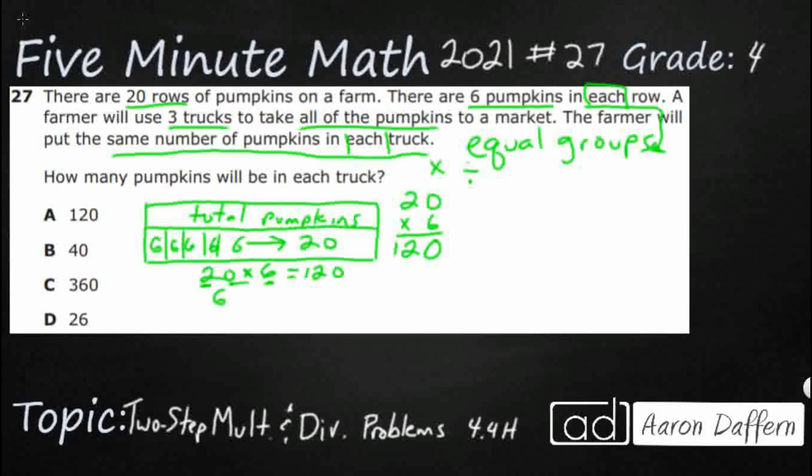Or we could just flip this around. We can say six times 20. That's the commutative property, letting us flip that around. And you could have just skip counted by 20s. 20, 40, 60, 80, 100, 120. Either way, we've got 120 pumpkins.